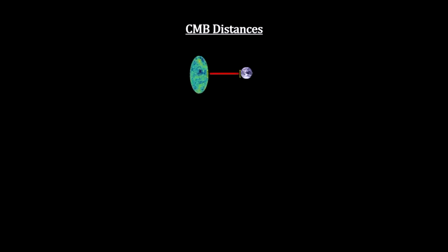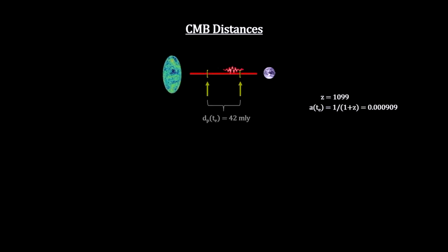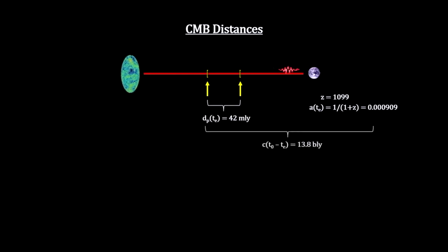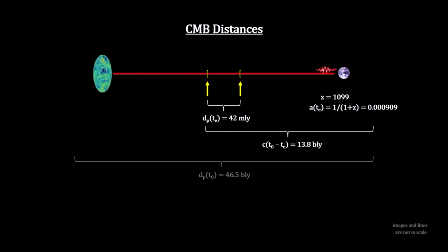The CMB redshift tells us that the light we see now was only 42 million light years away from our location when it was emitted. It traveled for just under 13.8 billion years to reach us, and its starting location is now 46.5 billion light years away, making the diameter of the visible universe 93 billion light years.